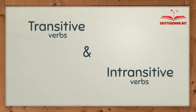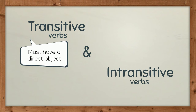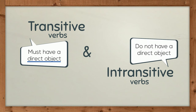Transitive and intransitive verbs. Verbs can either be transitive or intransitive. Transitive verbs must have a direct object to complete the thought. Intransitive verbs do not have a direct object.